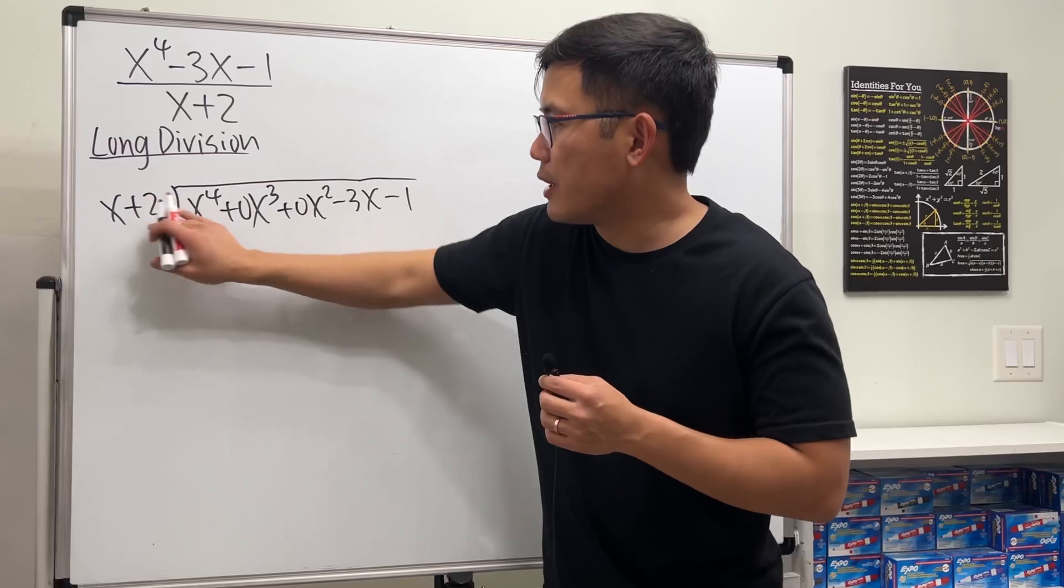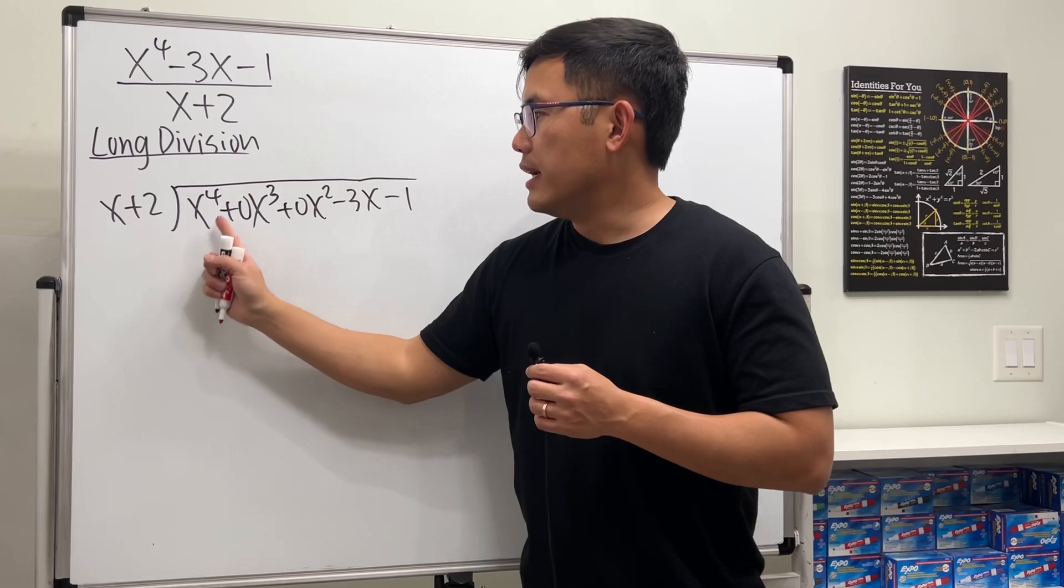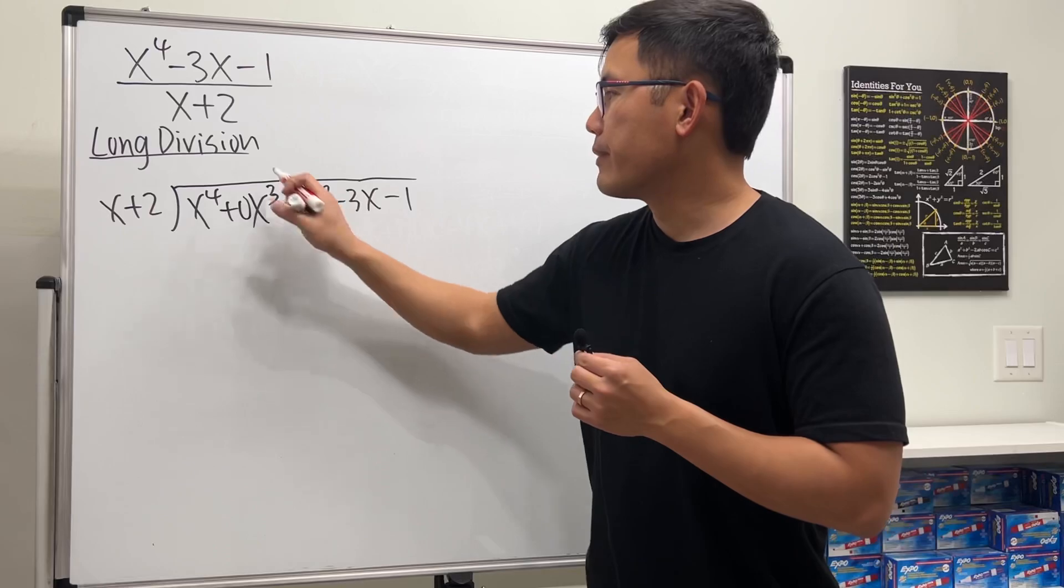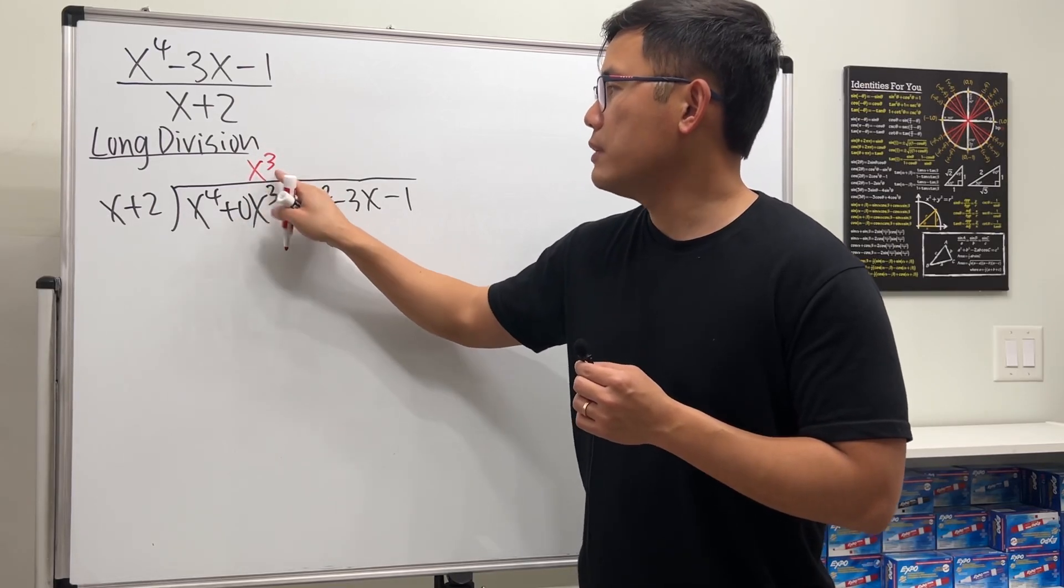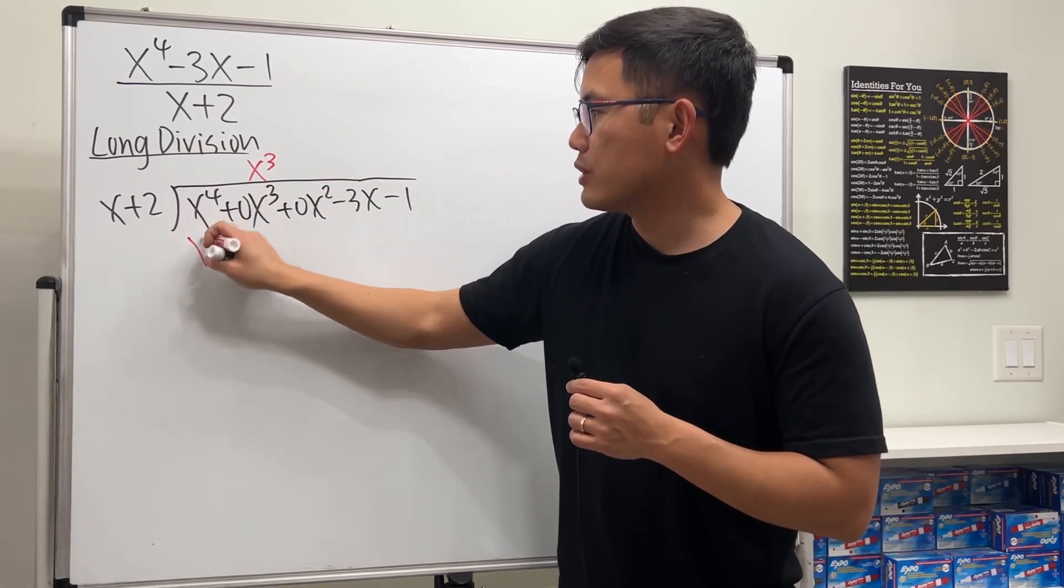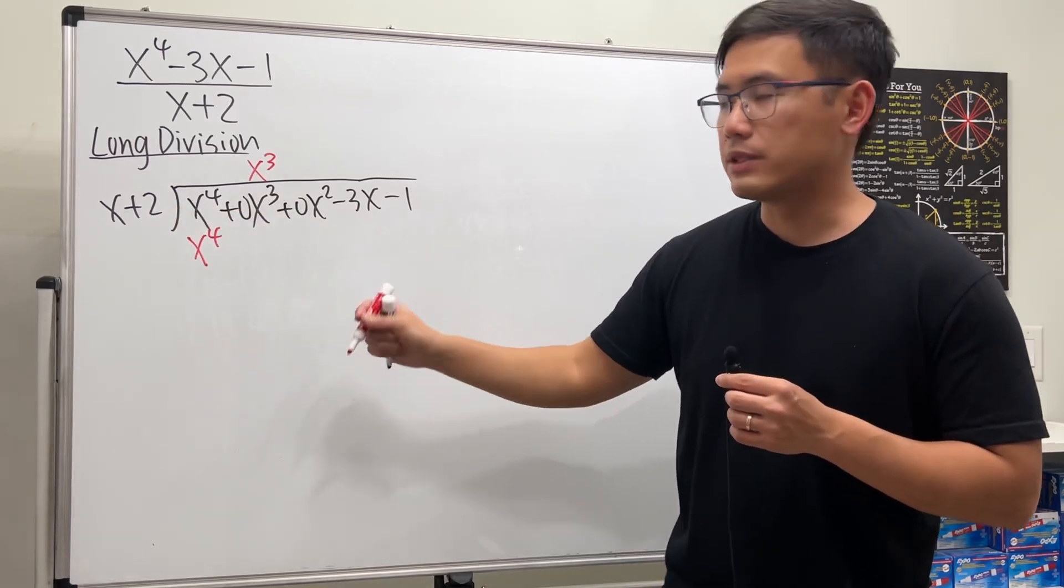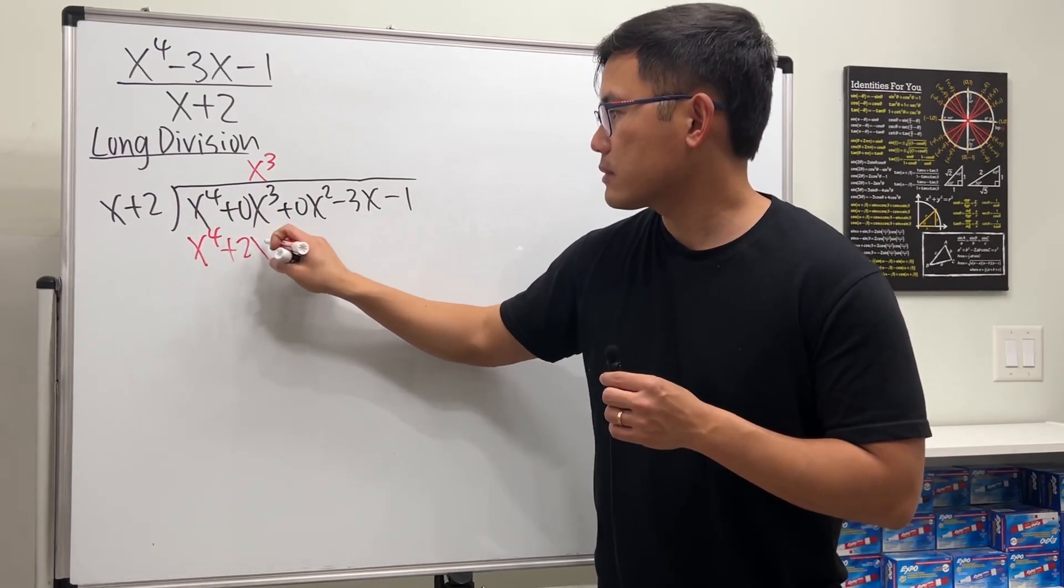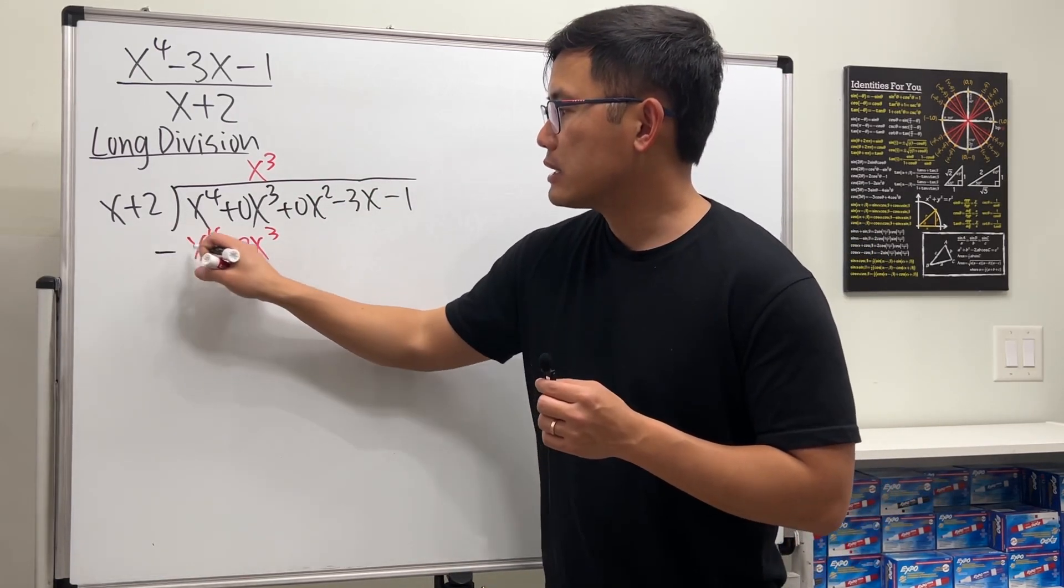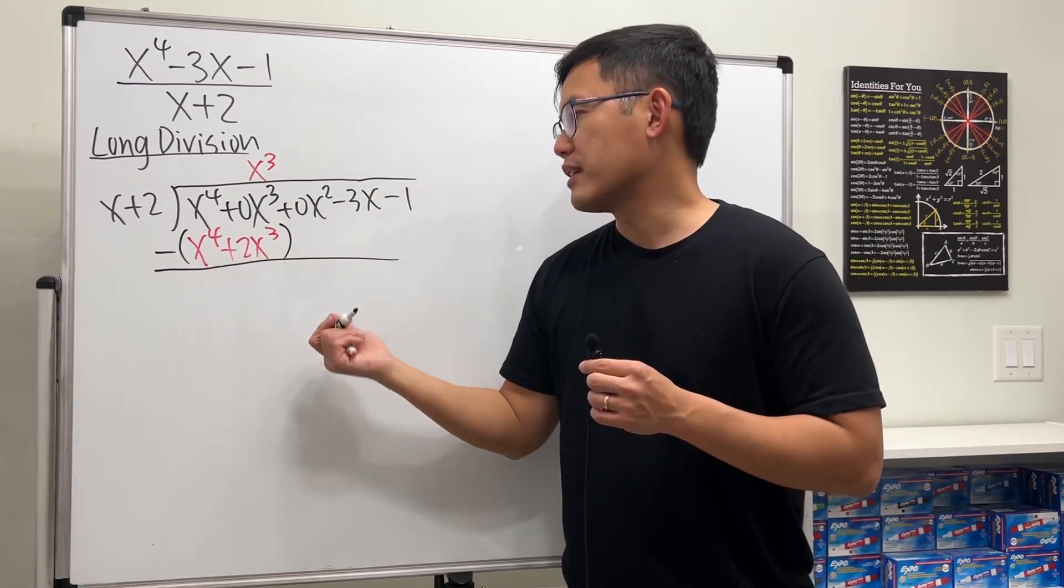And here we go. Just compare the first term inside and the first term on the outside. What times x will give us x to the fourth power? The answer is x to the third power, right? And let's line up. So we put x to the third power. And let's just go ahead and proceed. Take this times that, we get x to the fourth power. And then don't forget to take this and multiply by that as well. And we will get plus 2x to the third power. And for long division, we subtract. And I will recommend you guys to subtract and then put parentheses around it. Because we have to subtract both terms, right?